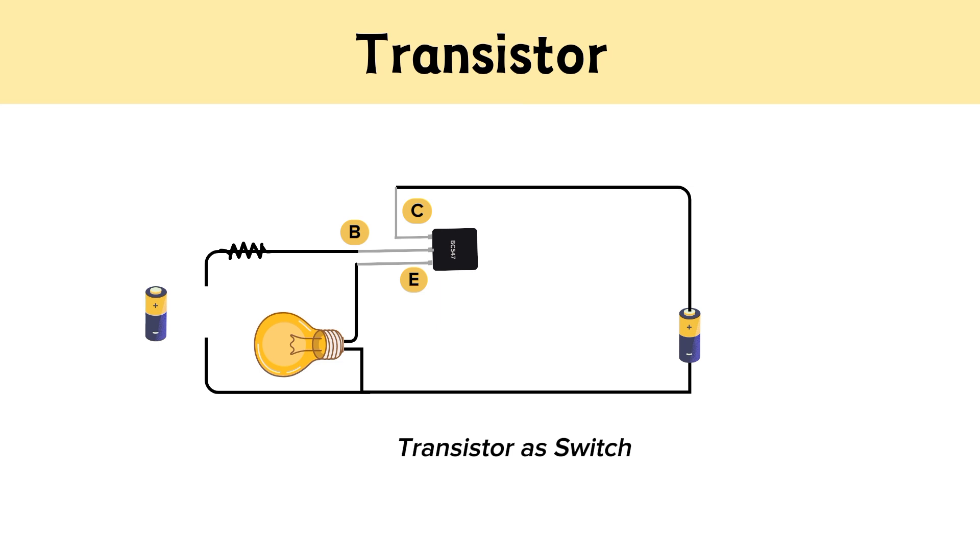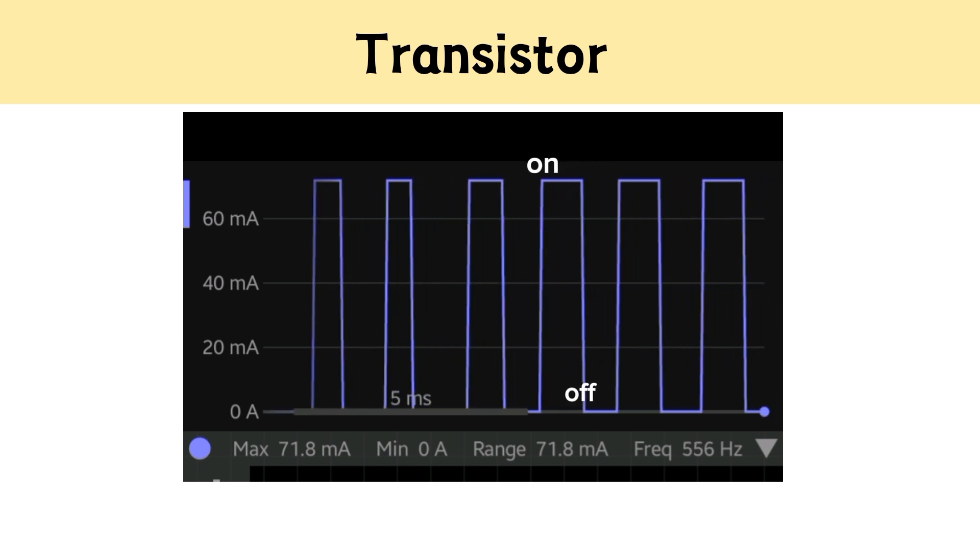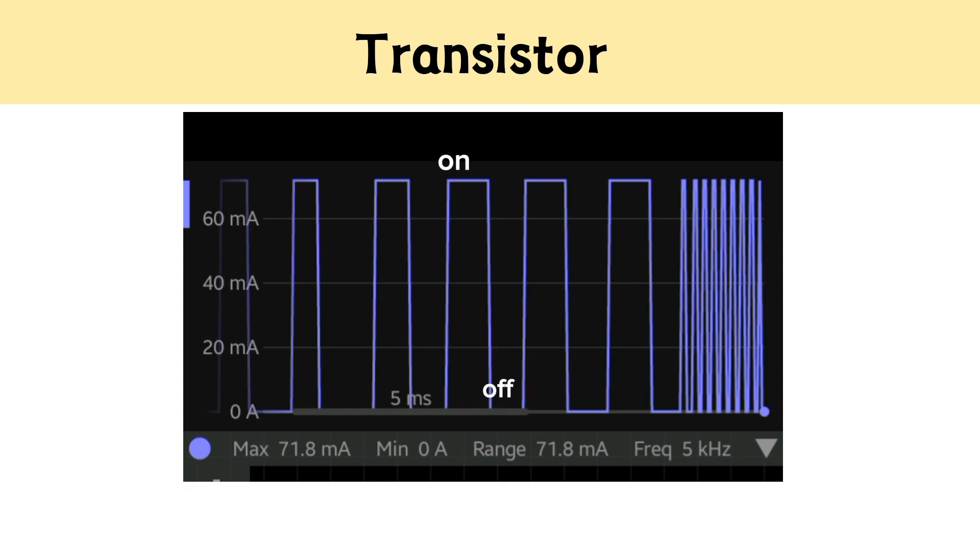This switching action is controlled by an electric signal at the base terminal. Transistors do not have any moving parts like mechanical switches, so they are called solid-state switches. Additionally, they can switch at high frequencies, meaning they can turn on and off millions of times per second.